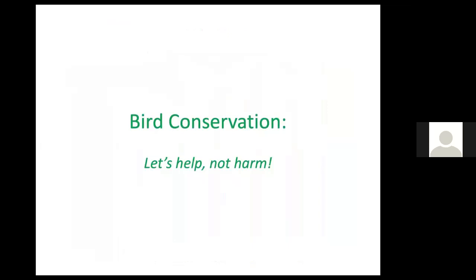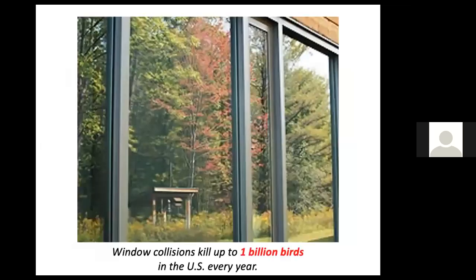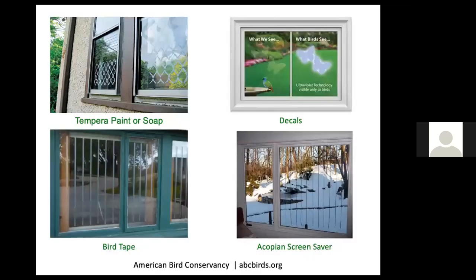First, let's do no harm. One harm we do is having large picture windows that perfectly reflect the outdoors, so birds don't perceive them as different and slam into those windows — killed or stunned and then easy pickings. We can make our windows more visible to birds. ABCbirds.org is a resource to learn more about these techniques. I will share my email address at the end of this program; feel free to request the list of resources used to create this program, including the URLs shown at the bottom of these slides.